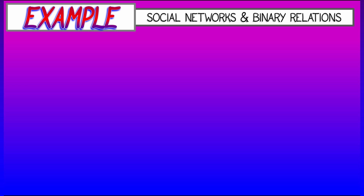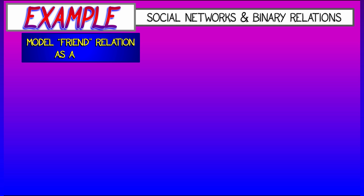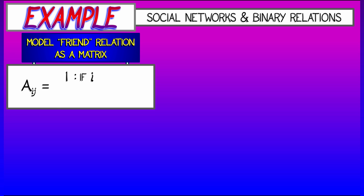Another great example comes from social networks, where we can use matrices to encode friendship relations. The rows and columns correspond to the people in a social network, and the entries of the matrix are either 1 or 0, depending on friendship. So the i,j-th entry is equal to 1 if person i is friends with person j, and it's equal to 0 otherwise.